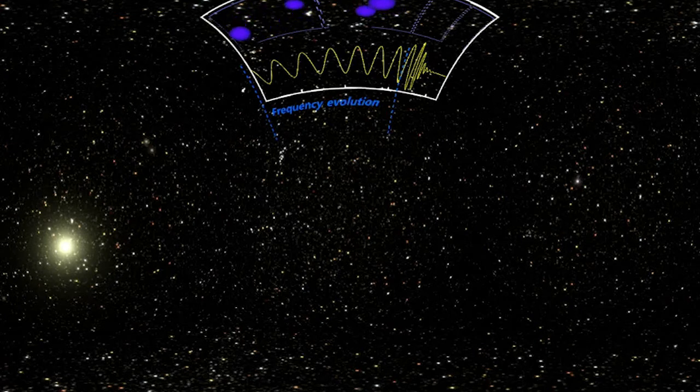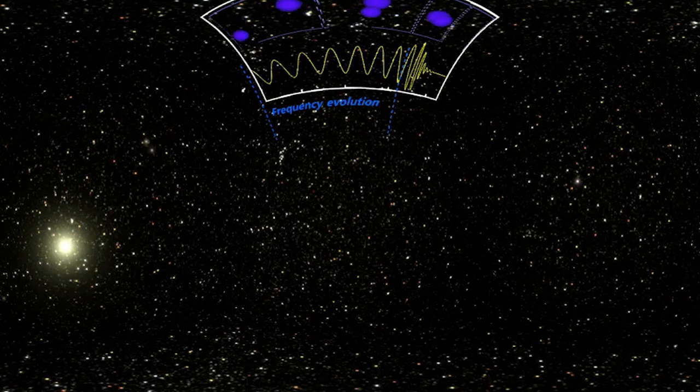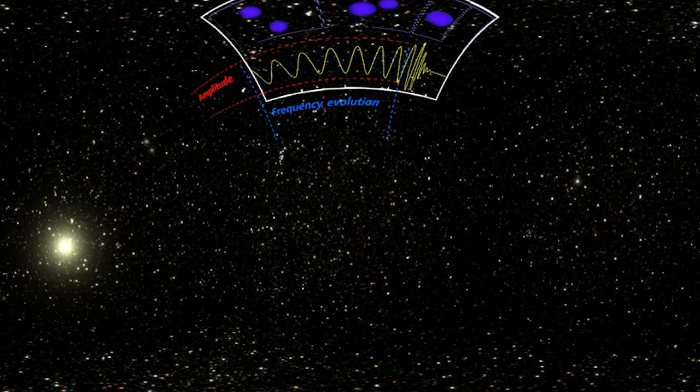Similarly, if you look at the amplitude, you can look at the size of the peaks—that's also changing. When they're far apart, the amplitude of the wave is smaller. Then as they get closer and closer together, the amplitude grows.